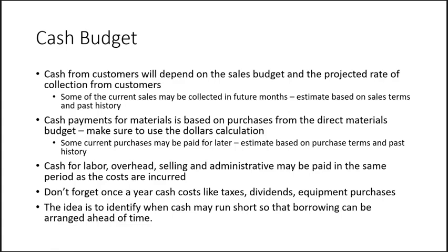Cash payments for materials follow the same concept — money going out based on purchases from the direct materials budget. Use the dollar amount, not the quantity. You buy materials in one month but may pay for them in the next, or split across multiple months depending on payment terms with suppliers. Labor, overhead, and selling and administrative costs are generally treated as paid in the same period they're incurred, as long as they're cash costs.